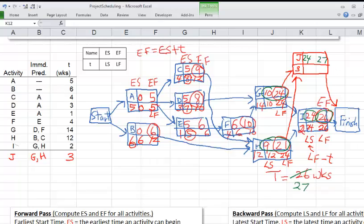Well, J could only be done at 27 weeks. So the total time is now 27 weeks. So this is what we would use to start the backward pass. So for LF of J, we would put down 27, and also for LF of I, we would put down 27.